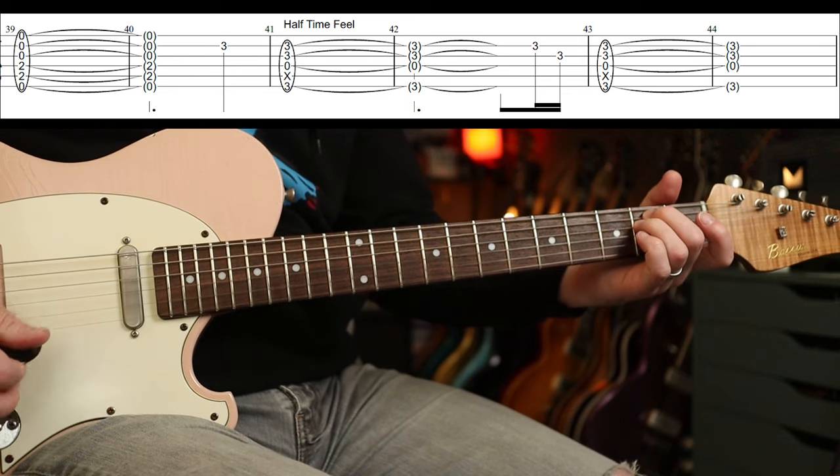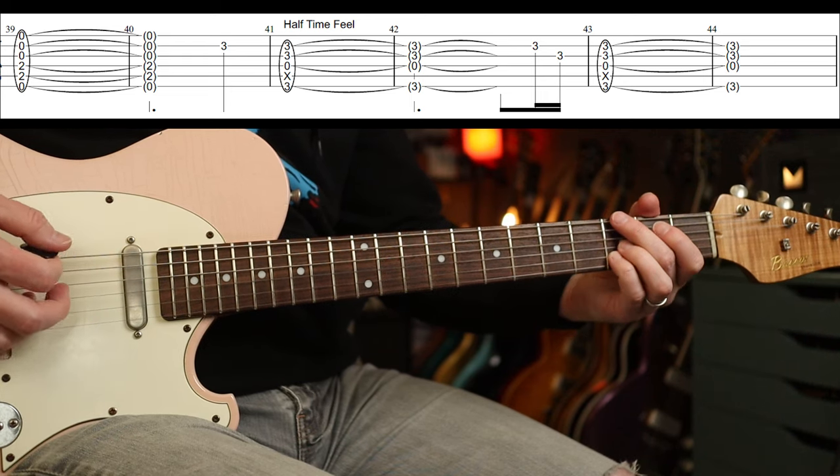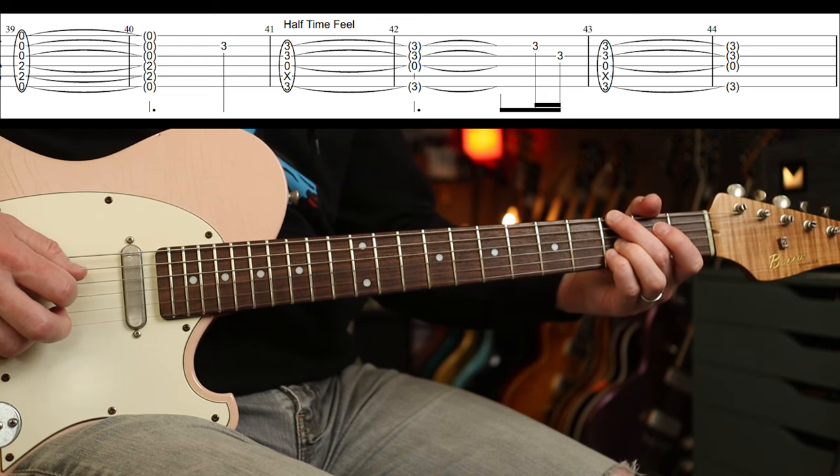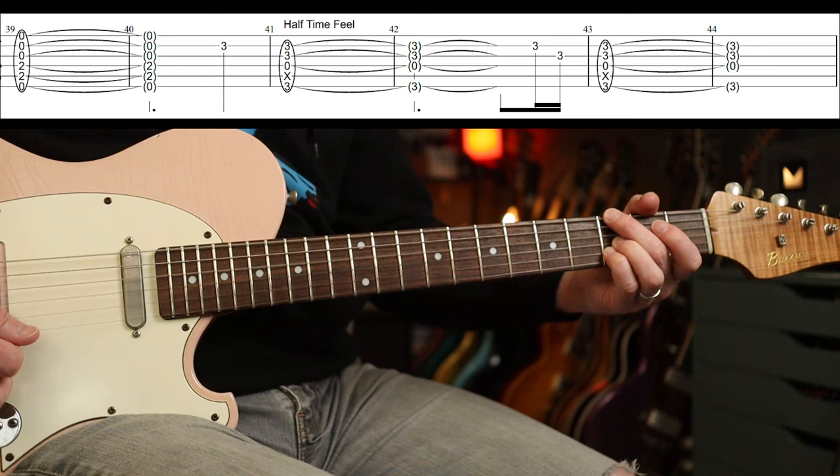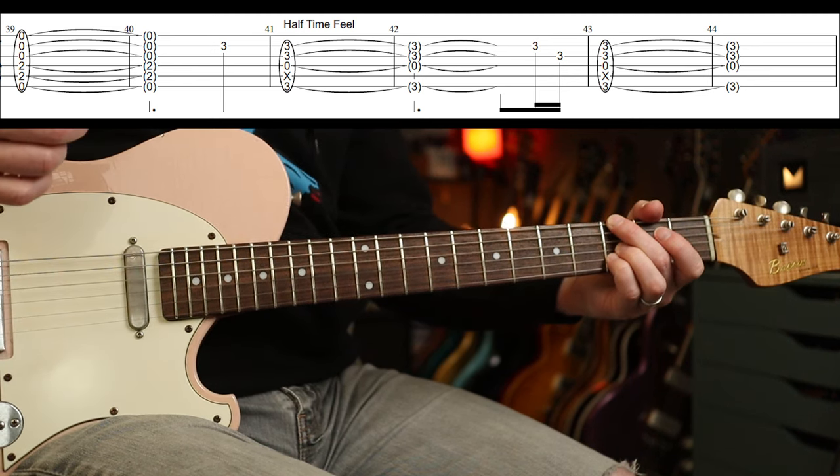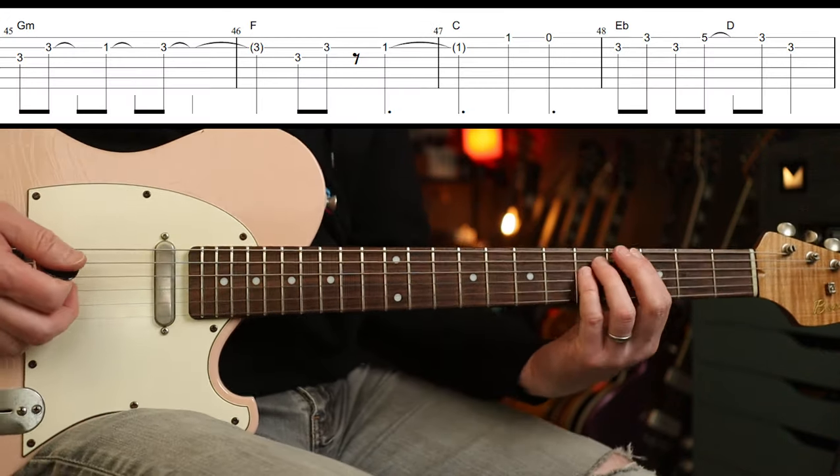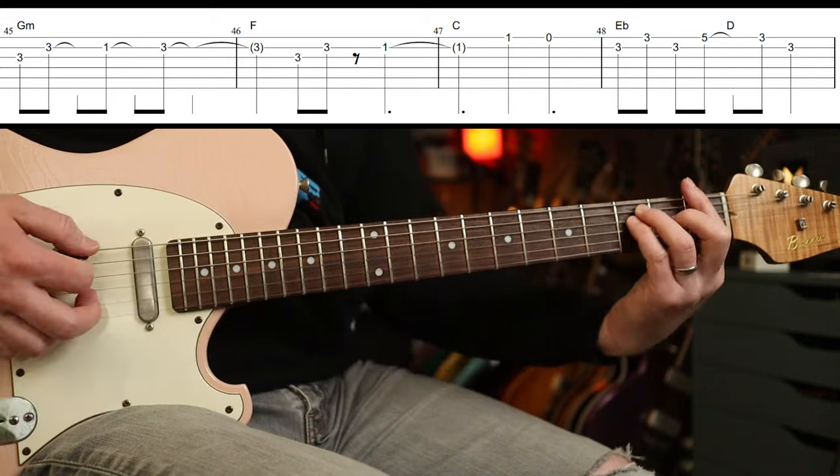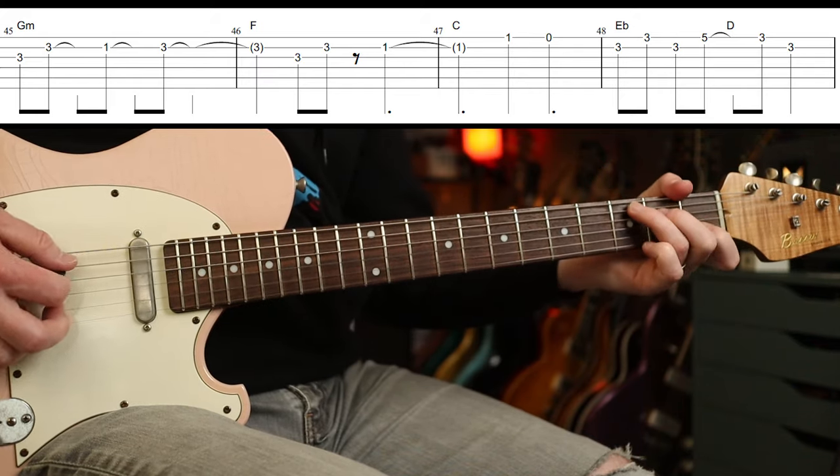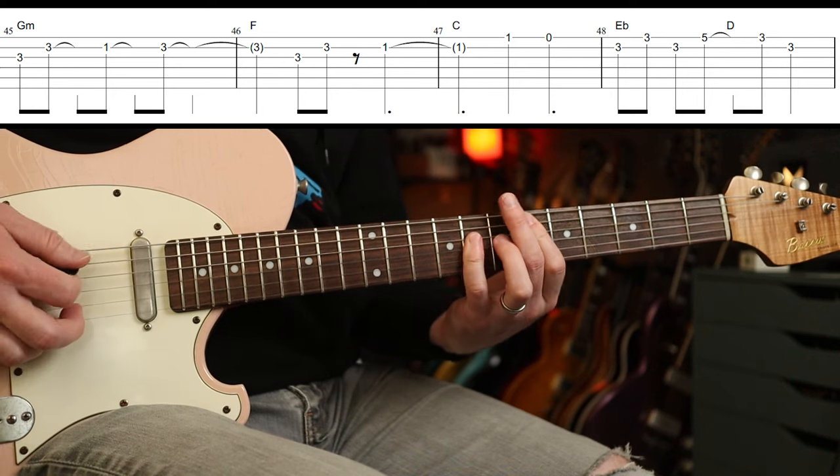Go to a G minor, right? And it's three, mute, zero, three, three. Okay. Then the other part is G minor, F, C, E flat, D.